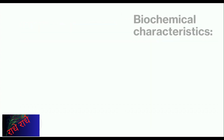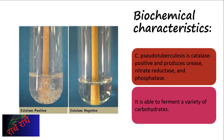C. pseudotuberculosis is an interesting bacterium due to its varied biochemical characteristics, which include catalase positive, the production of urease, nitrate reductase, and phosphatase, and the capacity to ferment various carbohydrates.